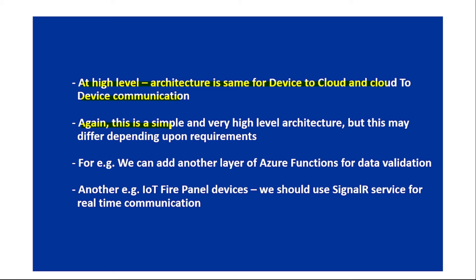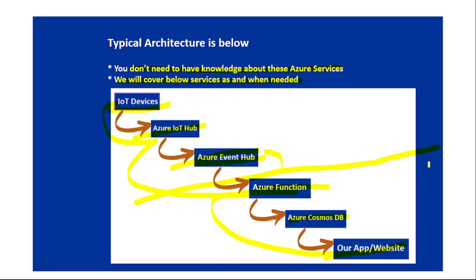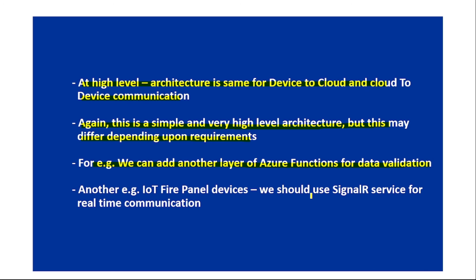This is a simple, high-level architecture and it may — and should — differ depending on your requirements. For example, we can add another layer of Azure Functions for data validation. In the fire panel devices example, we should ideally also use SignalR service for real-time communication. Thanks for listening.